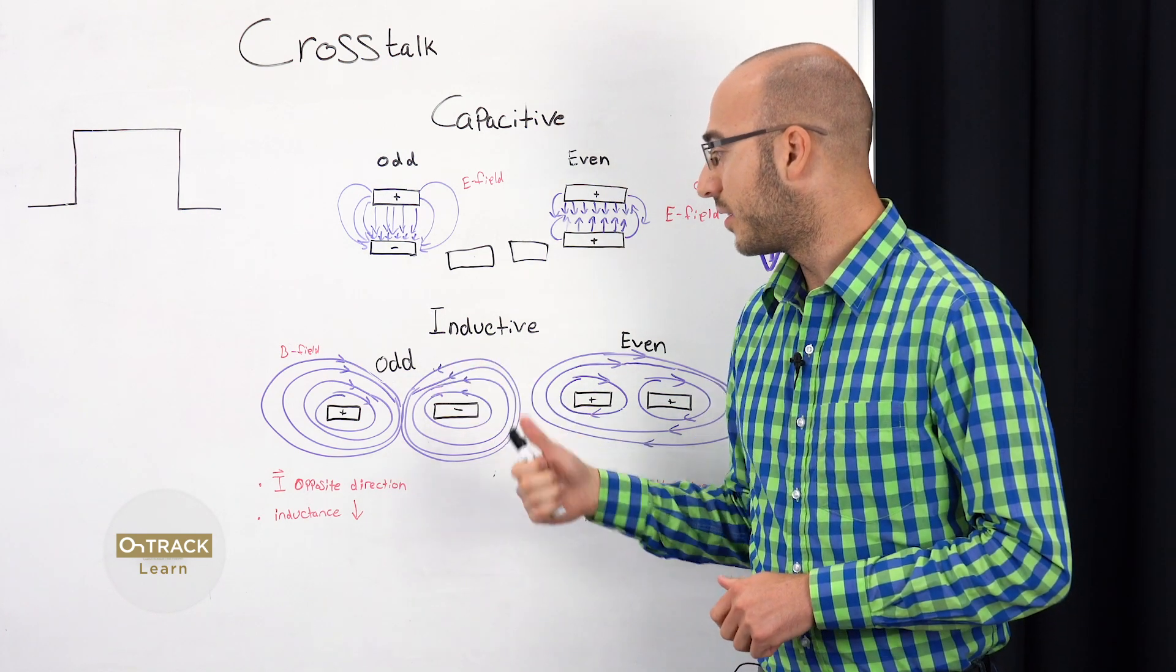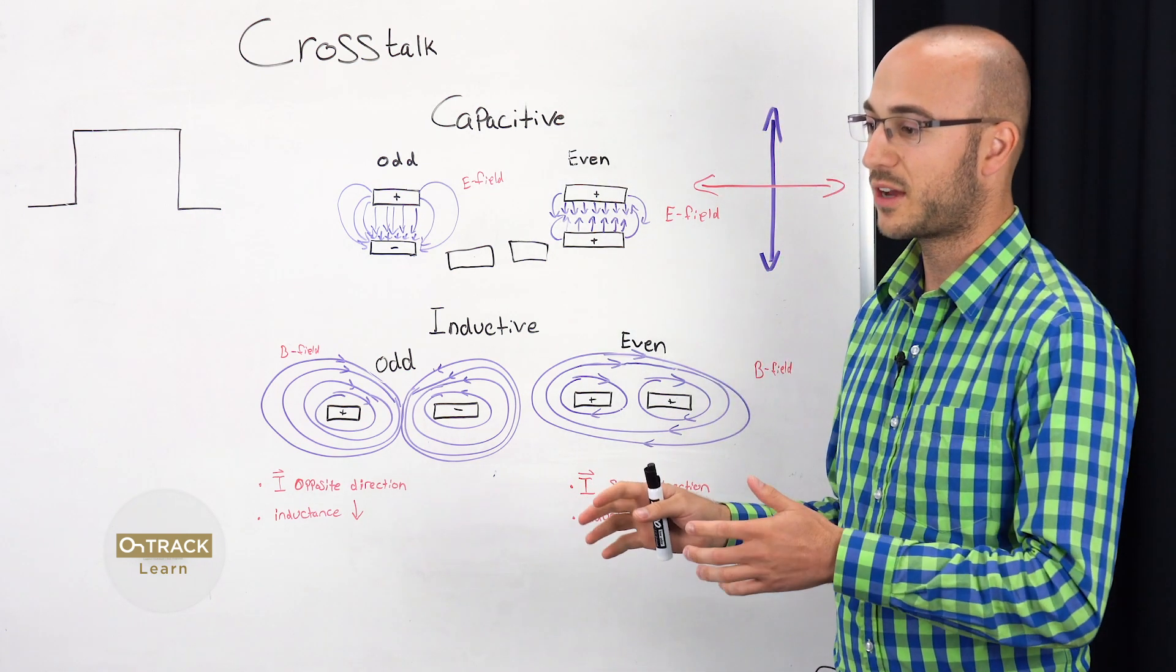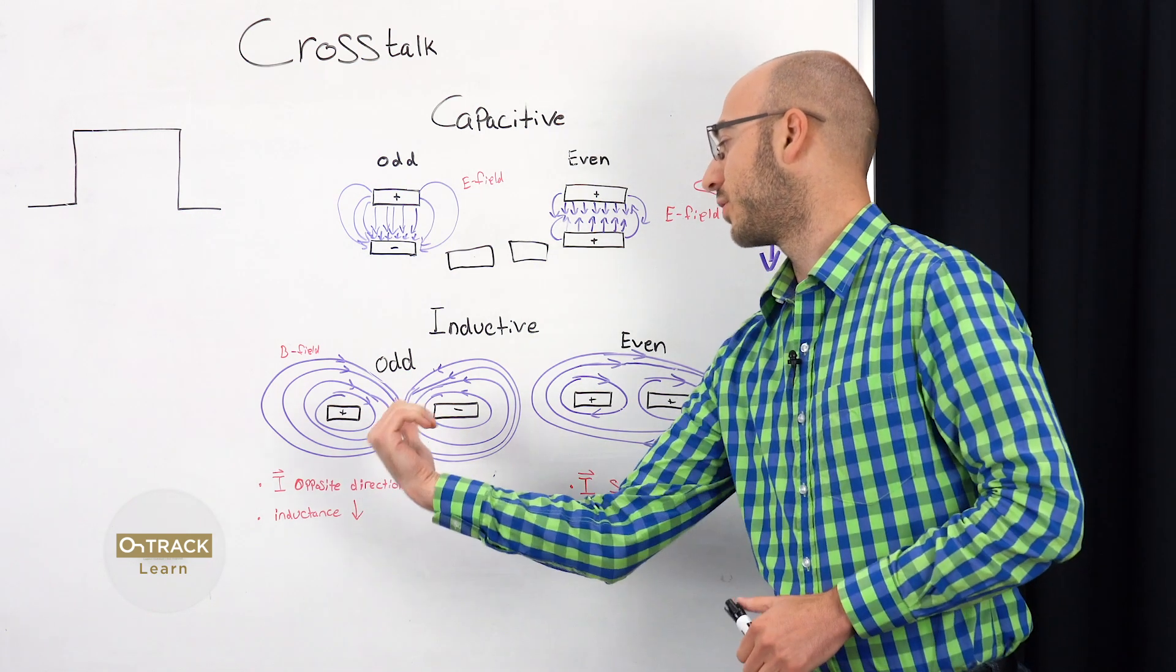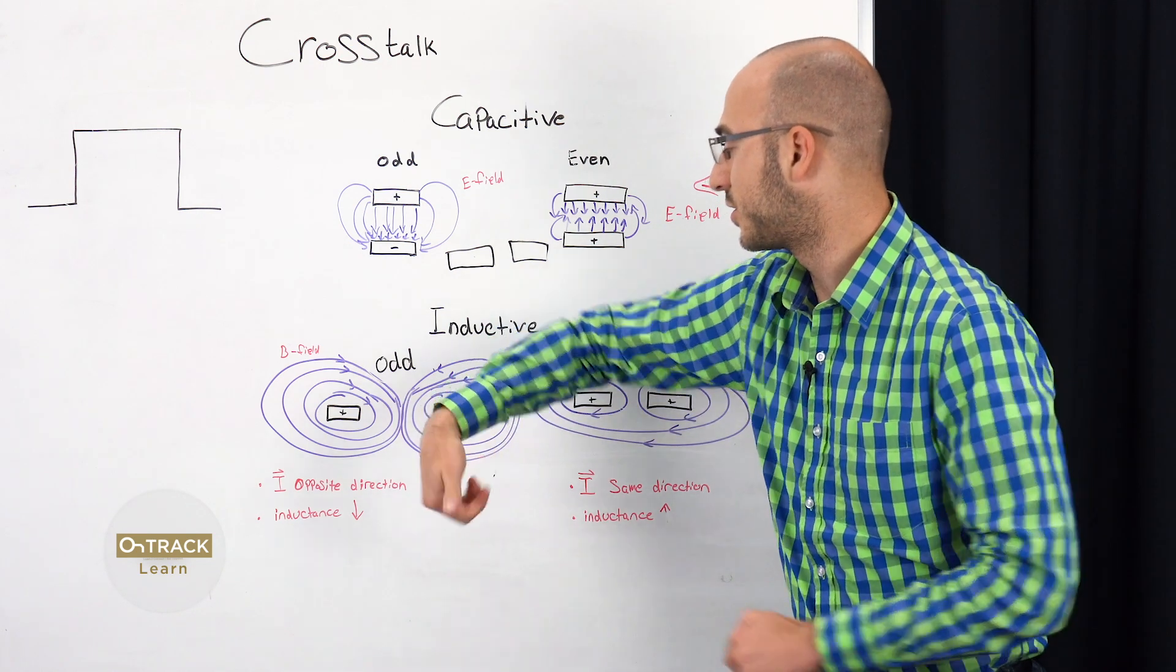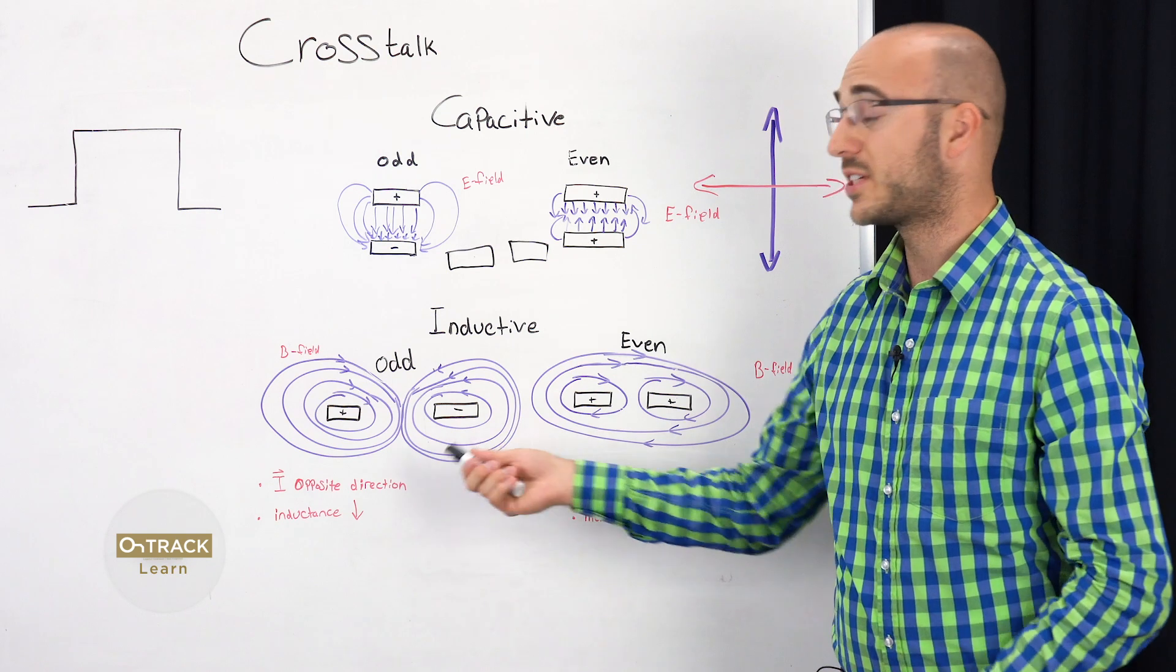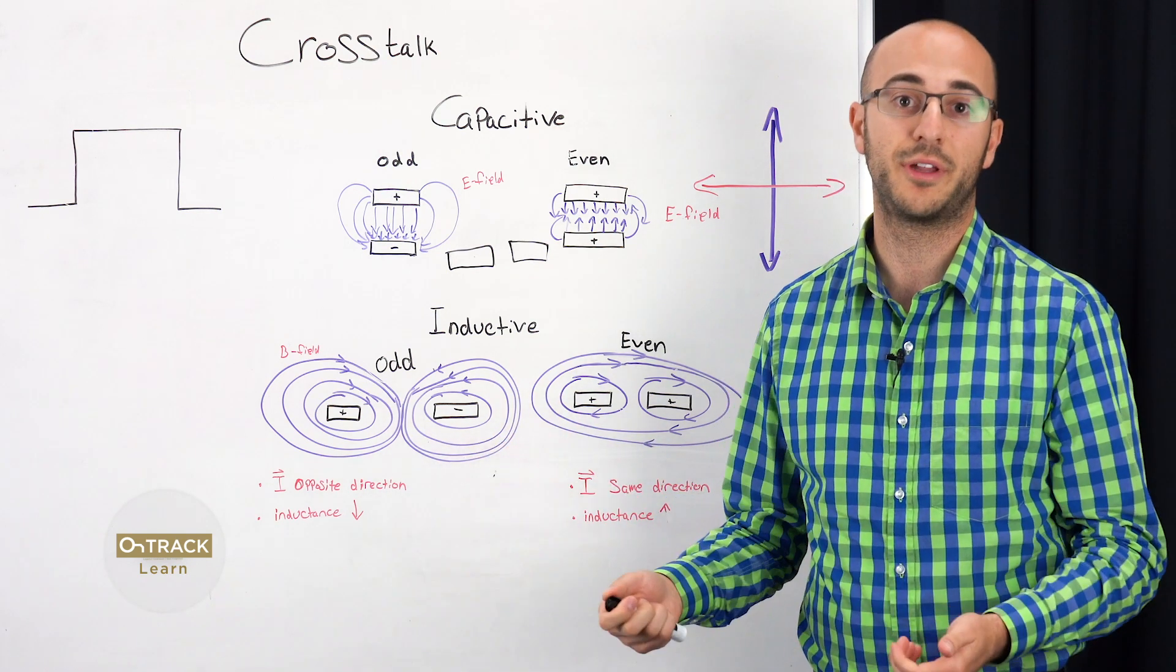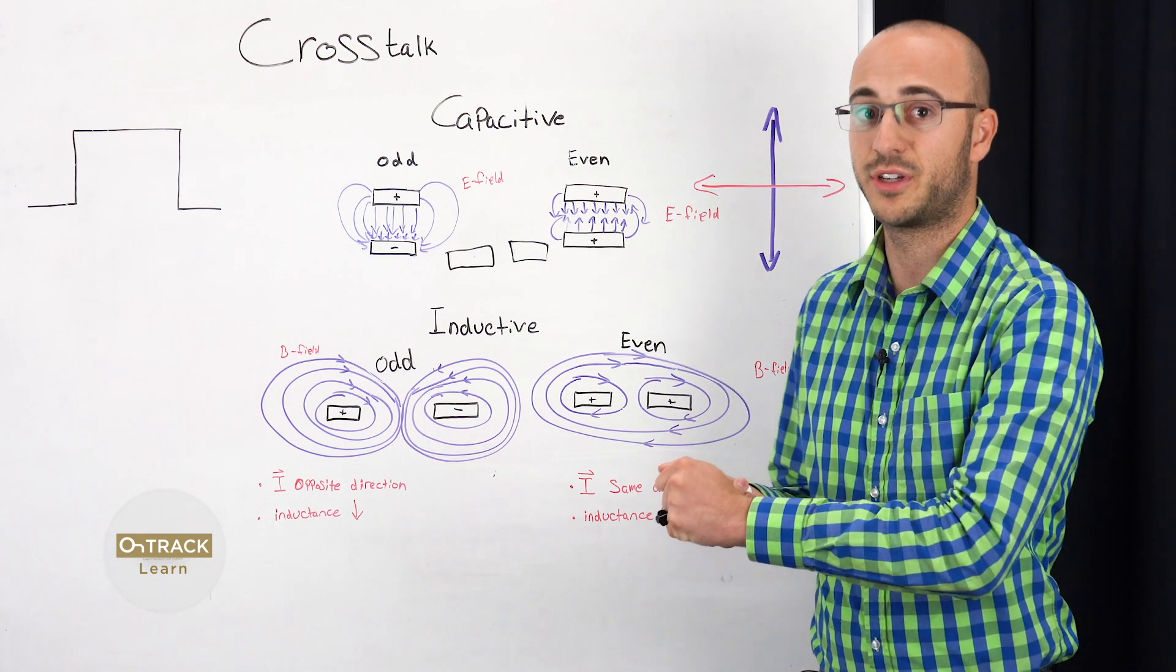And if we go to odd, out of phase, the current is going in opposite direction. And the magnetic field kind of cancels each other out. By using the right-hand rule, you have one going this way, other going this way. And the fields kind of cancel each other out. Which is actually one of the solutions you can implement when routing, is kind of have the signals going in opposite directions.